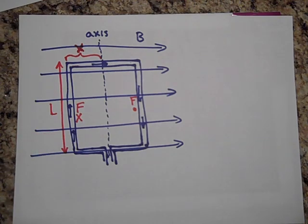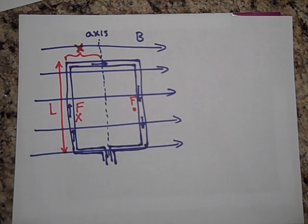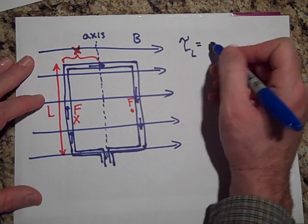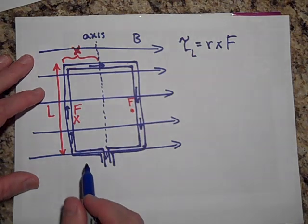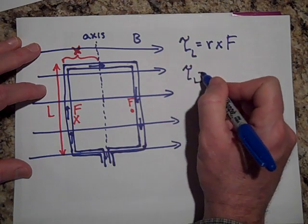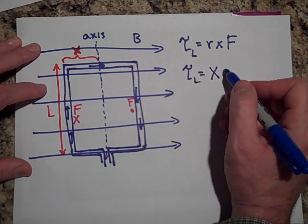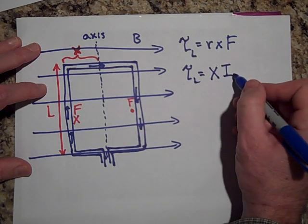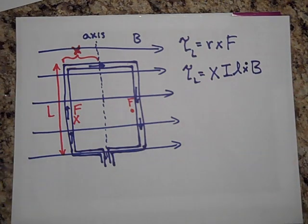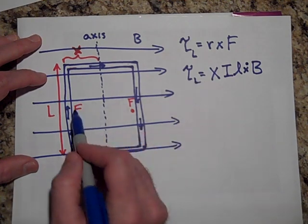Let's talk about the torque on this wire. We have two torques: one on the left side pushing down and one on the right pushing up. The torque on the left side is r cross F, where r = x. So the torque on the left side is x times the force, and the force is ILB. So the torque on the left is x·I·L·B.